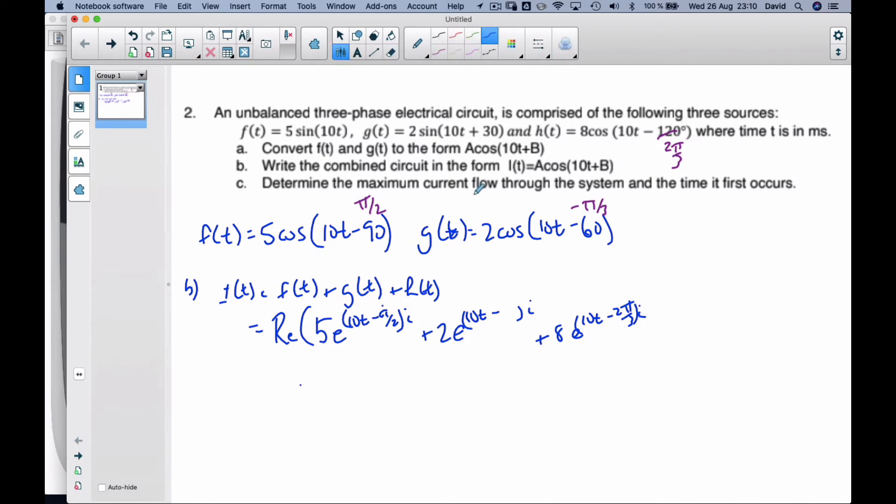Making sure that I make this in radians because my calculator likes radians when I deal with complex numbers. Now using my properties of exponents, I'm going to go 5e^(10ti) times e^(-π/2i).